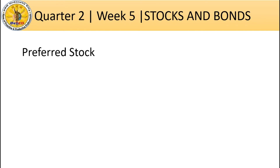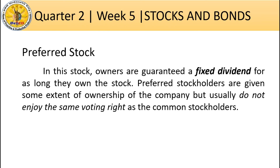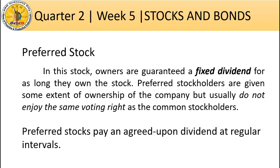Now let's have the preferred stock. In this type, owners are guaranteed a fixed dividend for as long as they own the stock. Unlike common stock which depends on the company's profit, preferred stockholders have a guaranteed fixed dividend. Preferred stockholders are given some extent of ownership of the company but usually do not enjoy the same voting rights as common stockholders. Preferred stocks pay an agreed upon dividend at regular intervals.